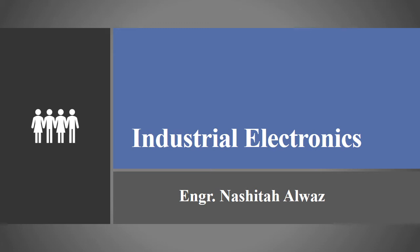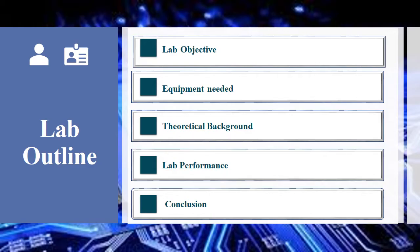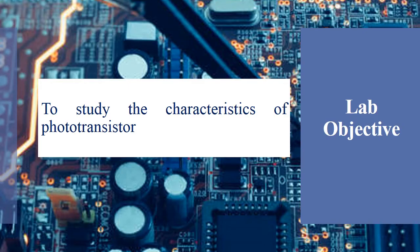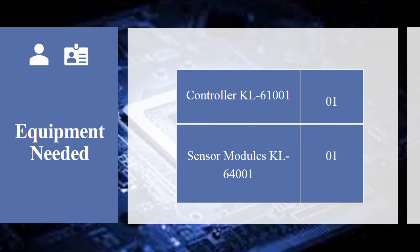Assalamu alaikum dear students, hope you are all fine. Welcome to the practical course of Industrial Electronics. Here is your lab instructor, Nashita Alwaz. The content of this presentation includes five different portions: lab objective, equipment needed for the experimentation, theoretical background, lab performance, and conclusion. The title of today's experiment is to study the characteristics of the phototransistor.